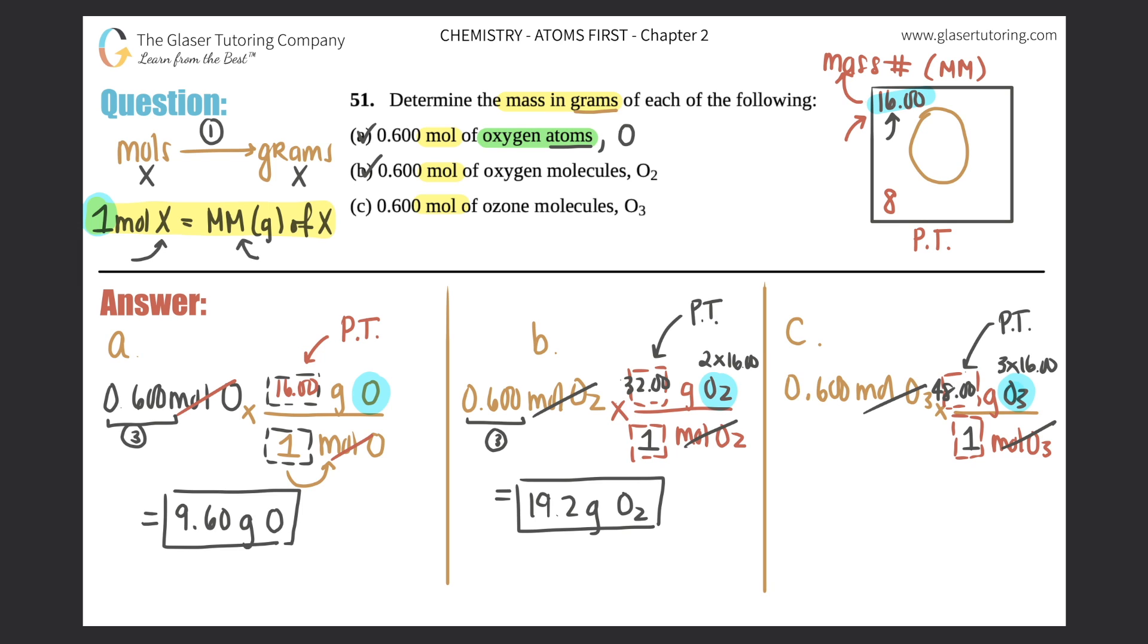So it's 28.8 grams of O₃. Box that answer—that's your final answer. Those are your answers for parts a, b, and c.